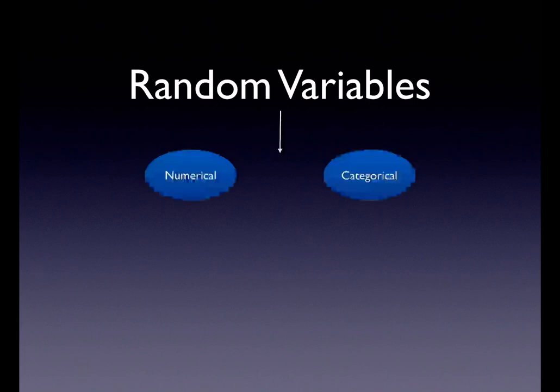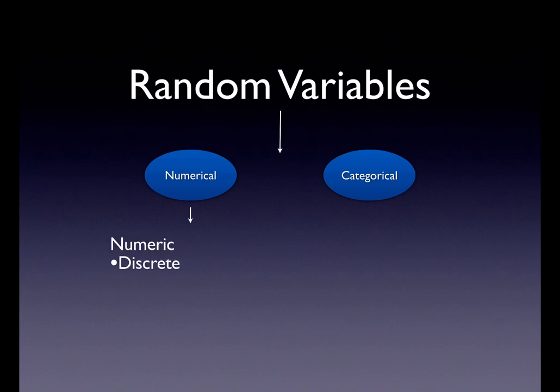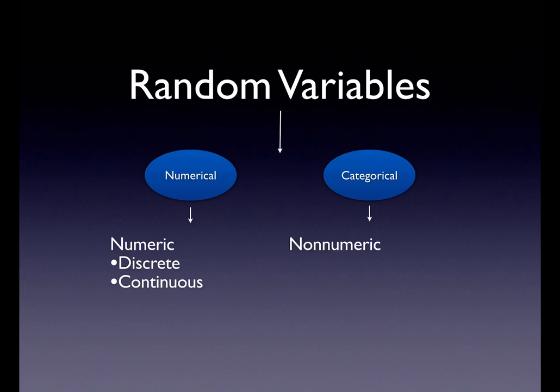We're breaking down over these next chapters — 4, 5, 6, 7 — how we deal with numerical variables and categorical variables. In numerical we have discrete and continuous, and then categorical are non-numeric.